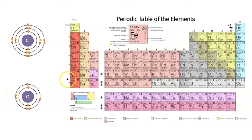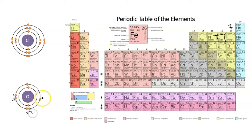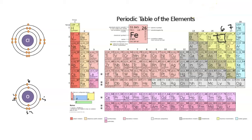If we look at oxygen, oxygen is in group 16. And if you count the number of valence electrons in the Bohr's model, we see that we have six. So basically, what you're doing for groups 13 through 18 is you're subtracting 10 from the group number in order to get the number of valence electrons. Let's practice.